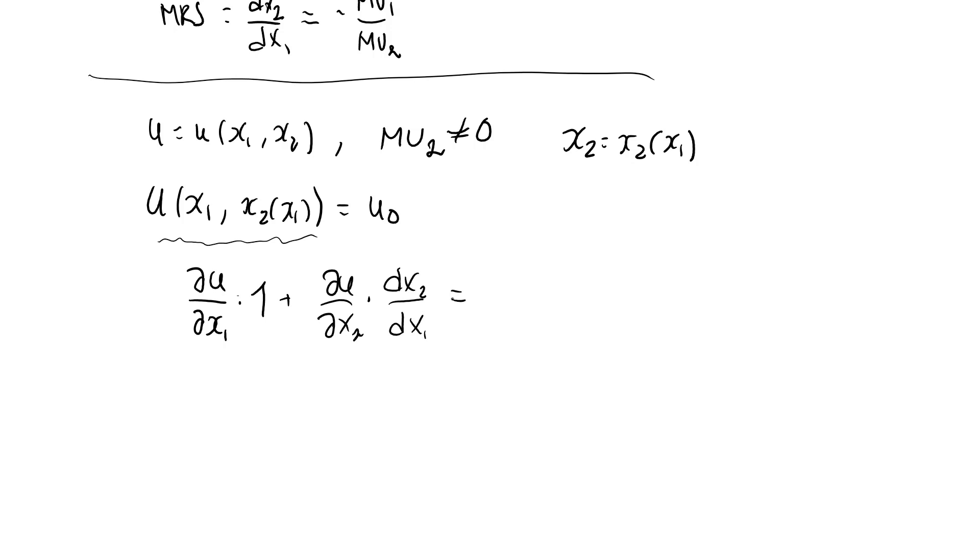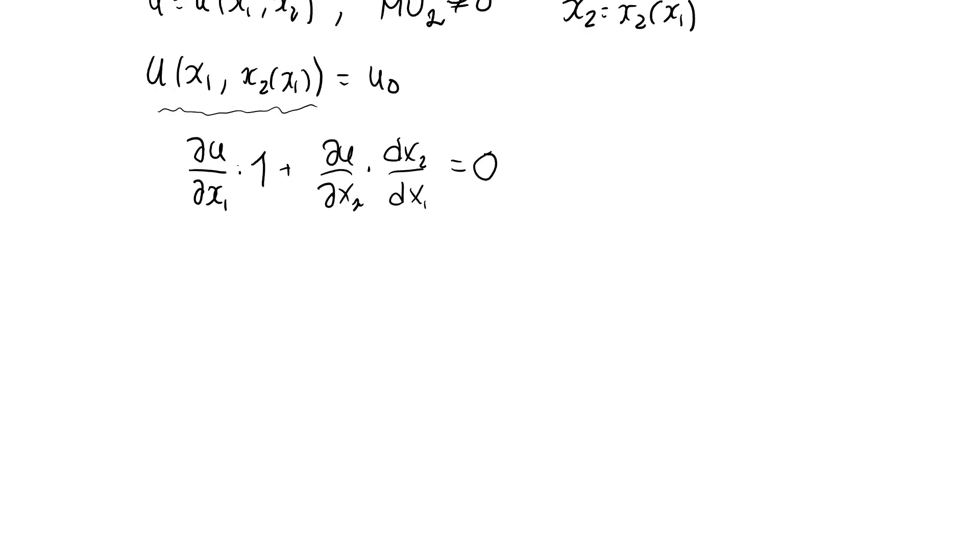If I differentiate the right-hand side, that's just a constant, so the derivative is zero. From this equation, I can simply solve for dx2 dx1, and it becomes minus du dx1 over du dx2, which is the same thing as the ratio of the marginal utilities.